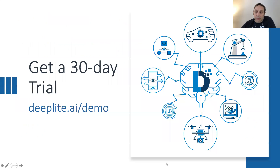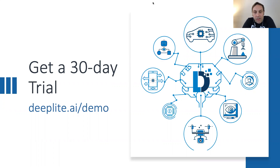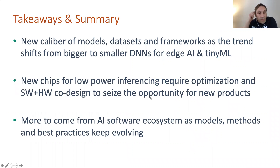For anybody attending today, we'd be very happy to do a more in-depth demo of our software and walk you through it in more detail. For anyone interested in trialing the software as well, we'd love to have a discussion — you can go to our URL at deeplite.ai/demo. That's really what we wanted to cover today, and now we'll wrap up and open for questions.